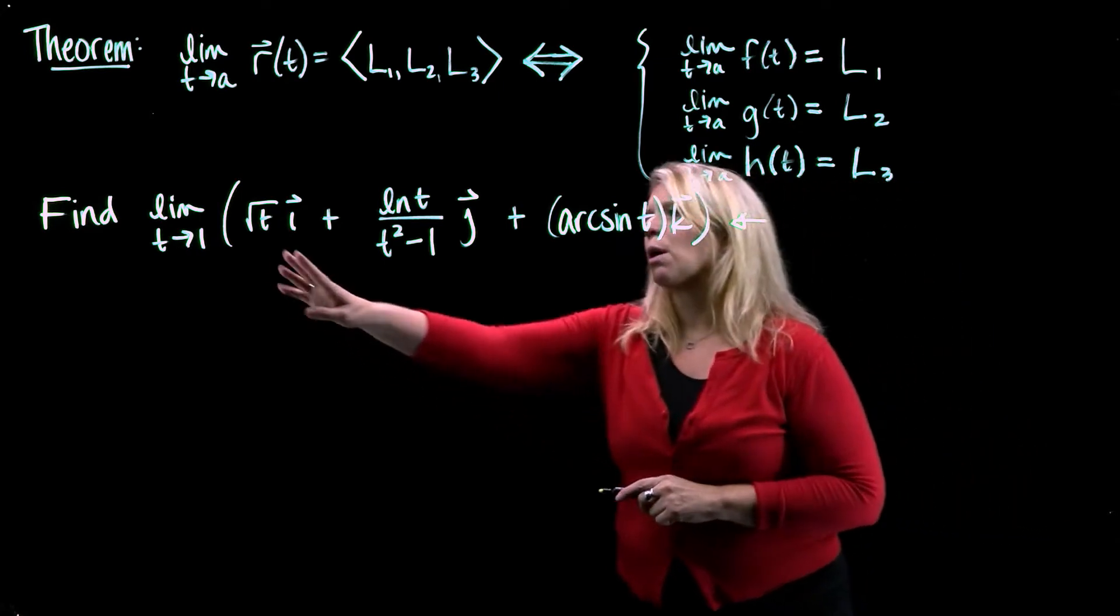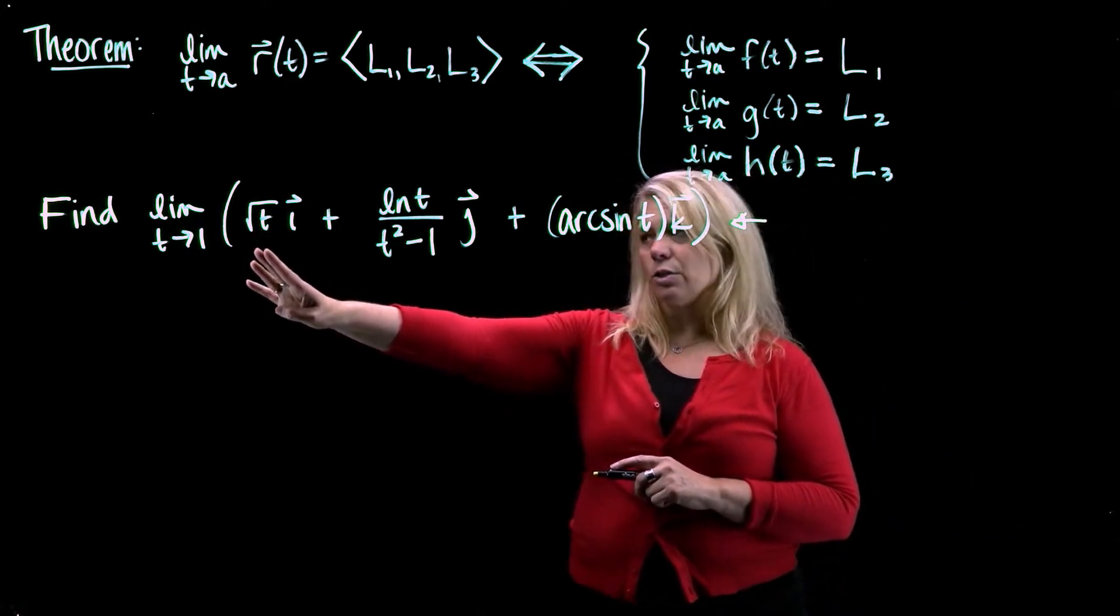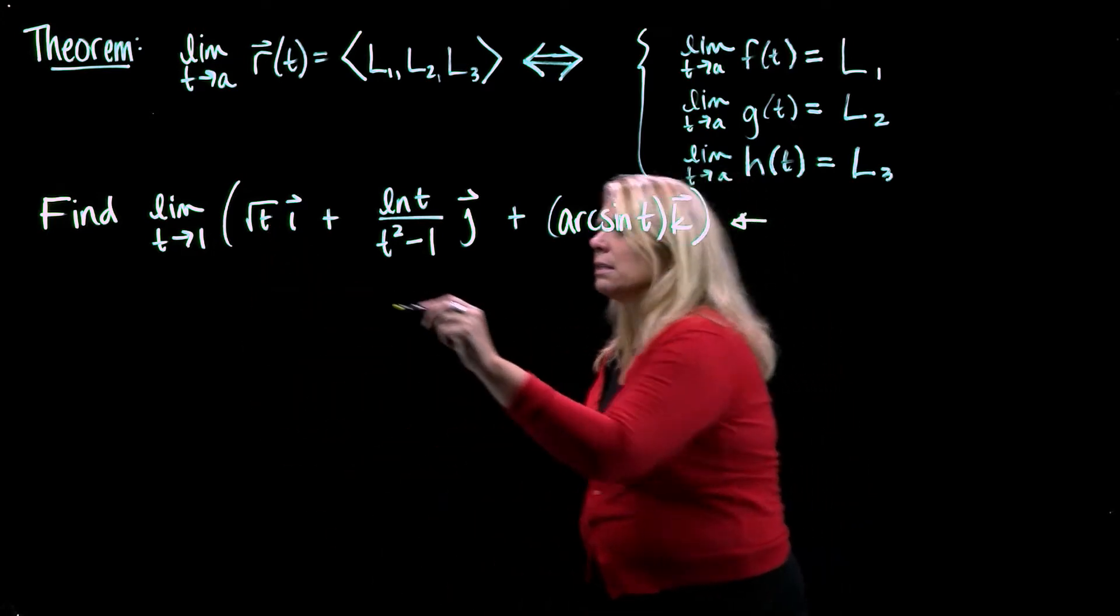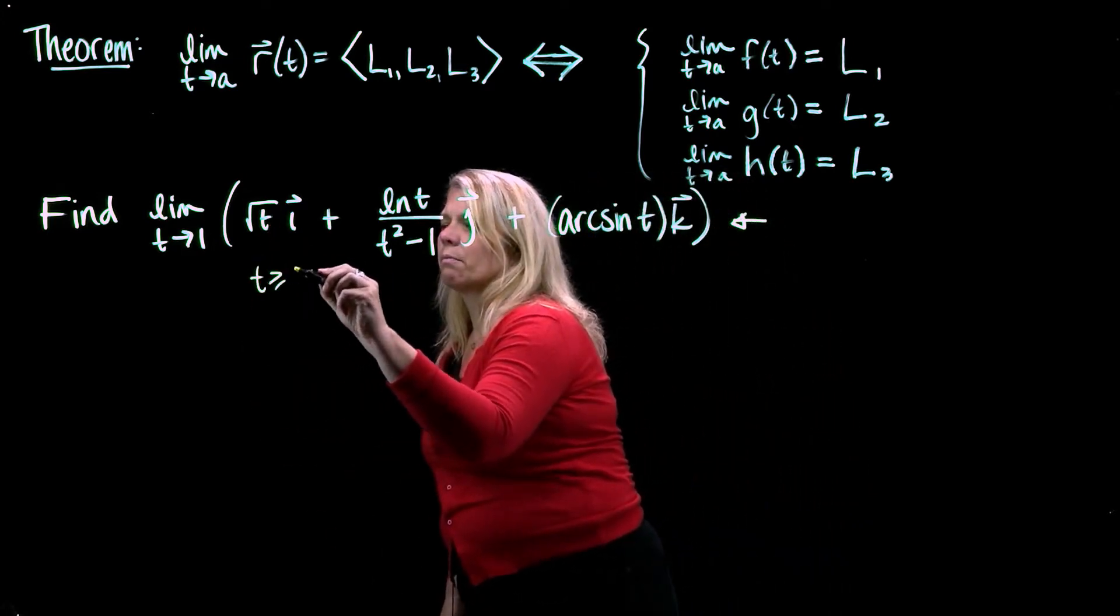The first component function is going to require that t is greater than or equal to 0 for this one because of the square root.